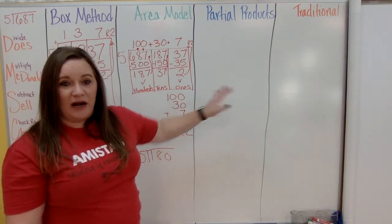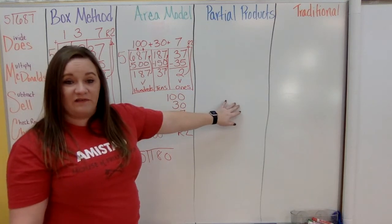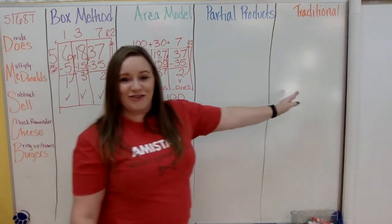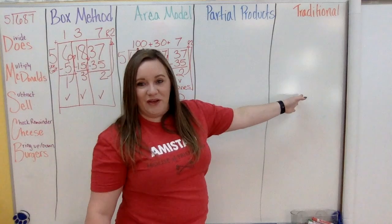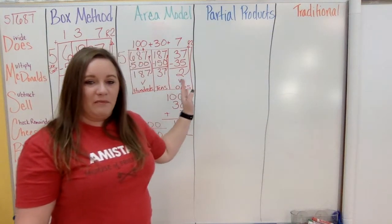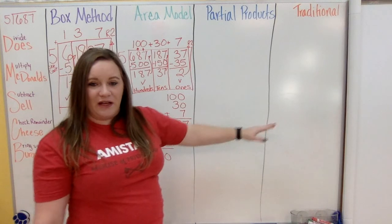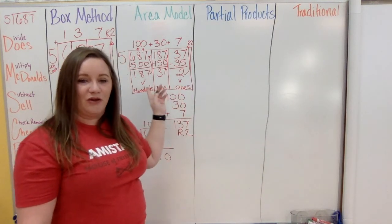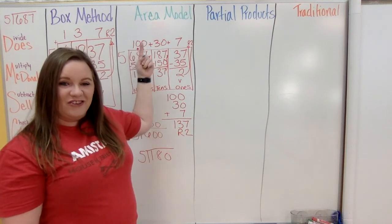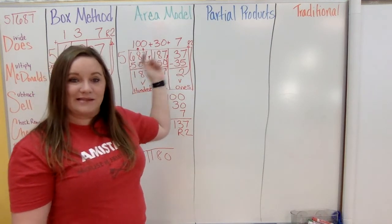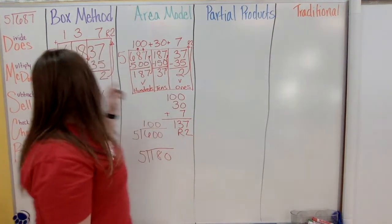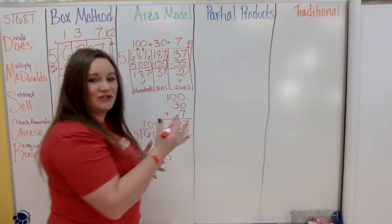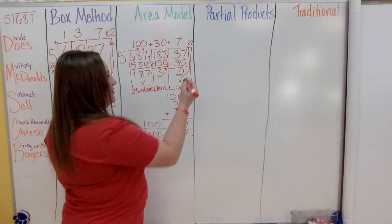Now we move to partial products. Partial products is a mix between the area model and the traditional method. It goes down like the traditional method and you subtract like the traditional method, but you take out hundreds, tens, and ones like the area model.